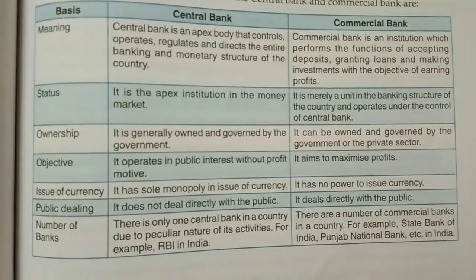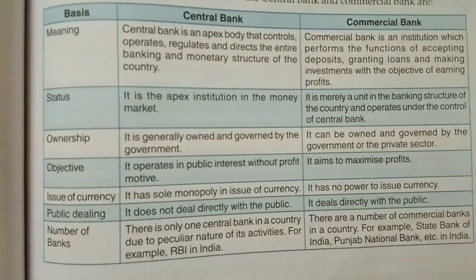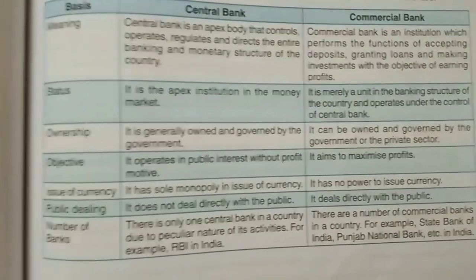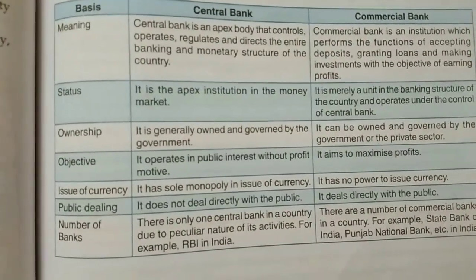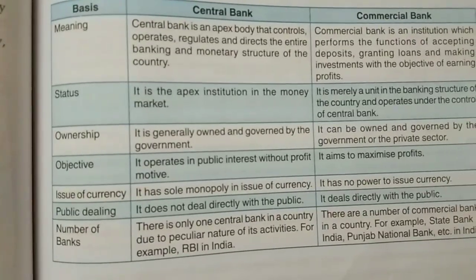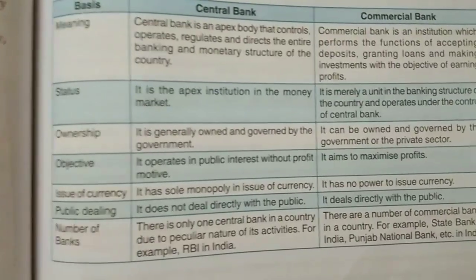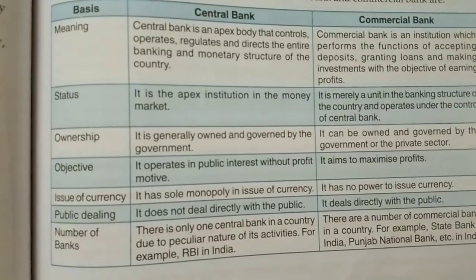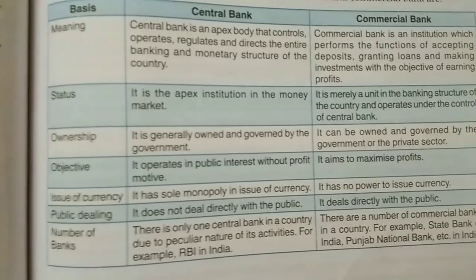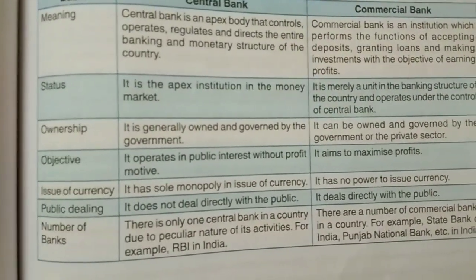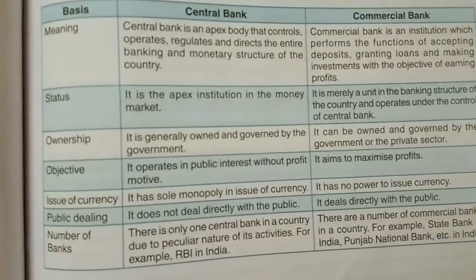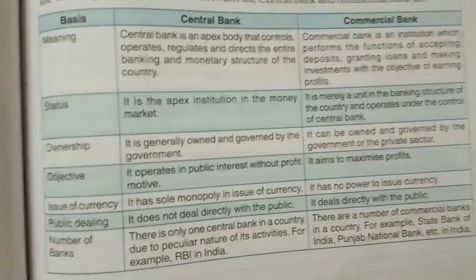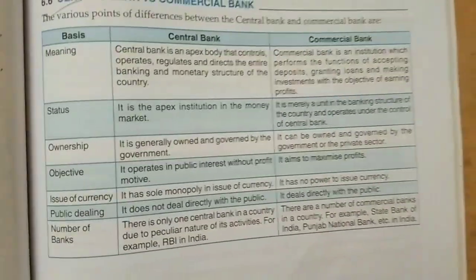Regarding ownership, the central bank is owned and governed by the government, while a commercial bank is governed by both the government and the private sector. The central bank has no profit motive, whereas commercial banks aim to maximize profit. The central bank has a monopoly on the issue of currency, except the one rupee note and coin which is issued by the Ministry of Finance; commercial banks have no power to issue currency. The central bank does not deal directly with the public, while commercial banks have direct public dealings. There is only one central bank in a country — the RBI in India — whereas there are many commercial banks such as State Bank of India, PNB, etc.